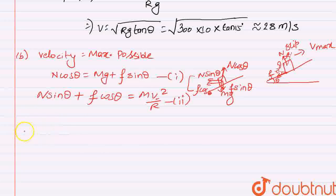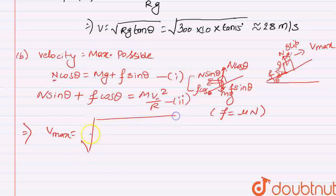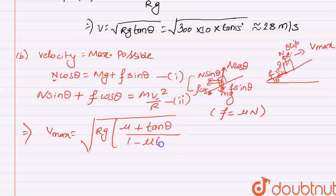From here, after manipulating these two equations, that is putting the value of N from first into second, and putting F as frictional force will be mu into N. So for evaluating this, we'll get Vmax equal to root under Rg into mu plus tan theta upon 1 minus mu tan theta.